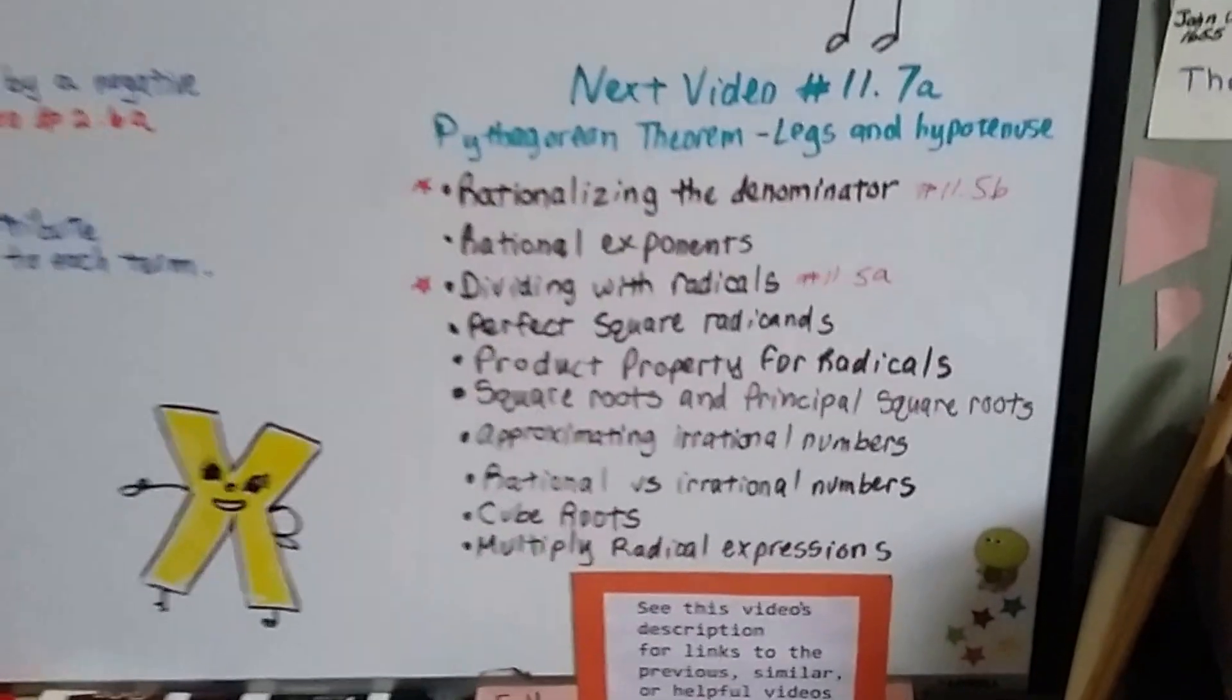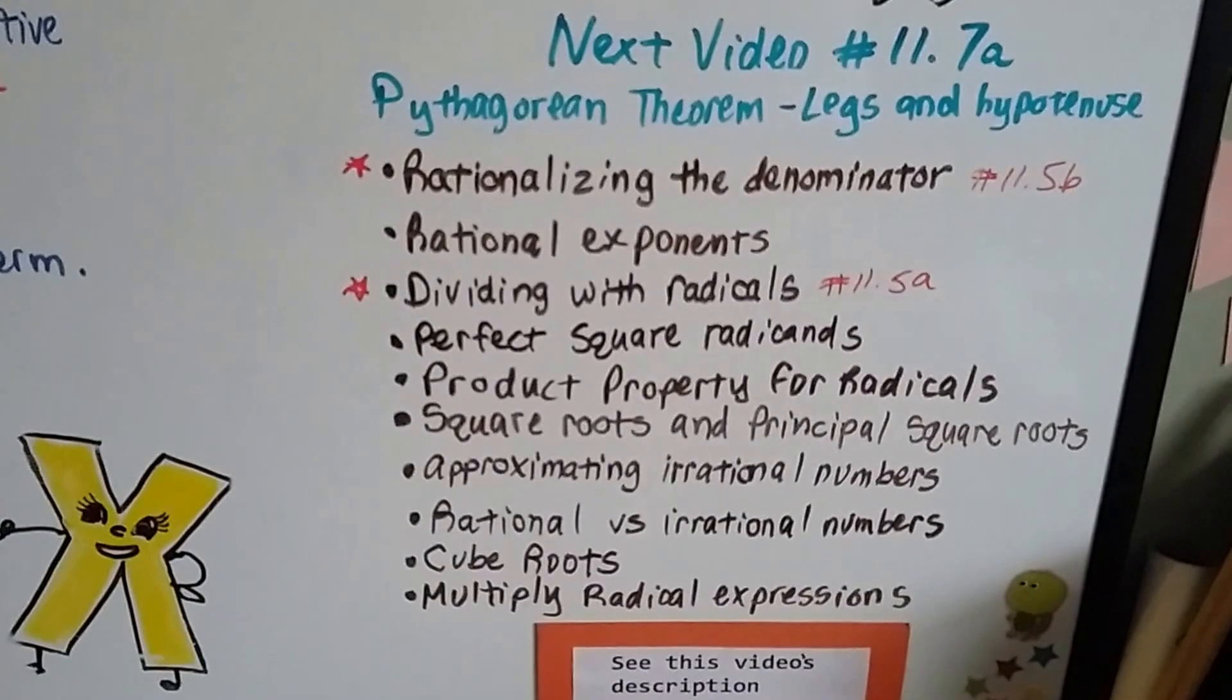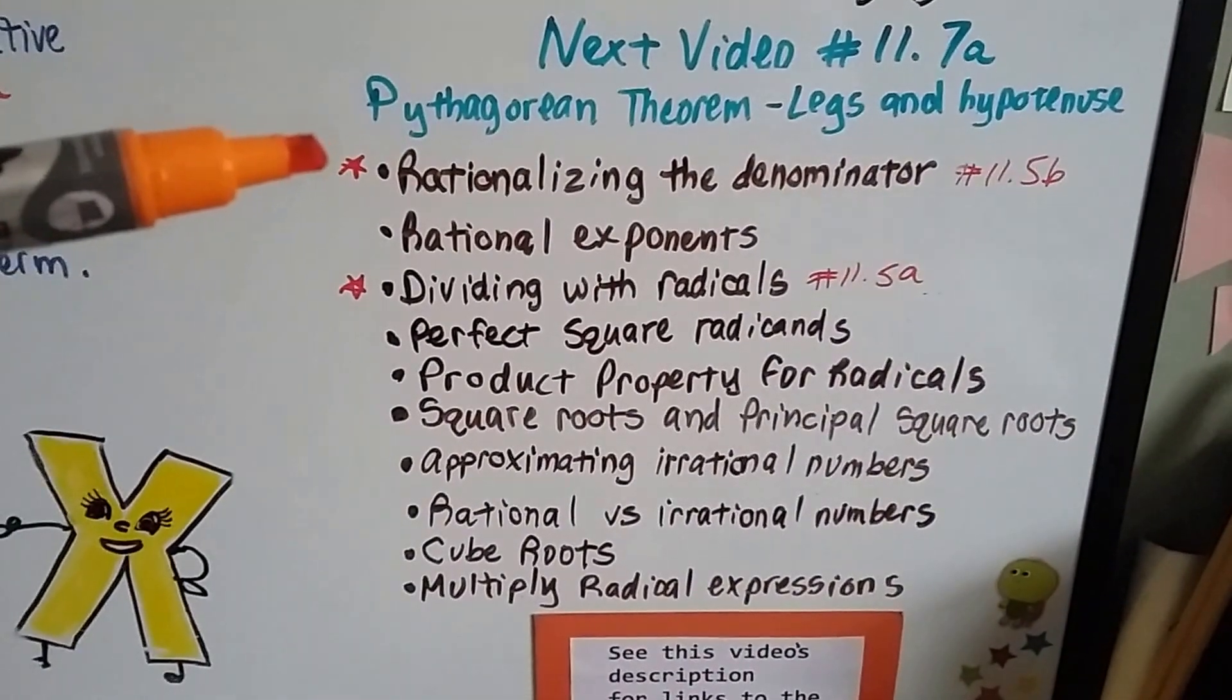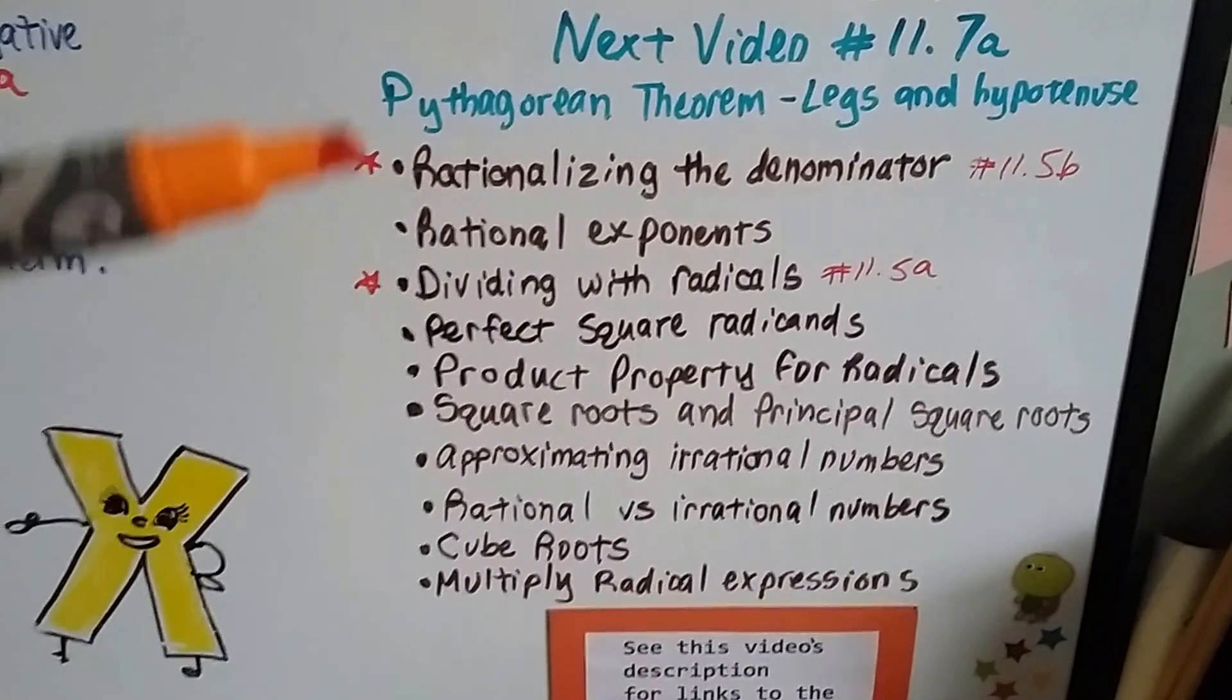Our next video, 11.7a, we're going to talk about the Pythagorean theorem and the legs and the hypotenuse of the triangle. And if you want to see the video that actually talked about rationalizing the denominator or dividing with radicals, those links are going to be in this description.